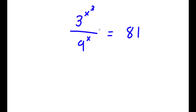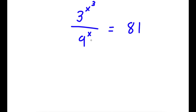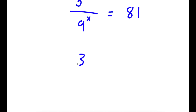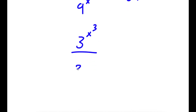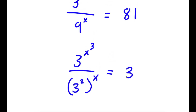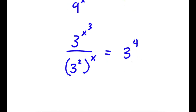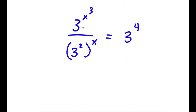On this problem, I have 3 to the power of x cubed over 9 to the power of x is equal to 81. To start, I'm going to first rewrite all of these terms. I'm going to rewrite 9 to the power of x as 3 squared to the power of x, and 81 I'm going to rewrite as 3 to the power of 4. The reason I did this is because now all my bases are 3.